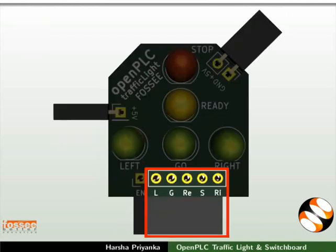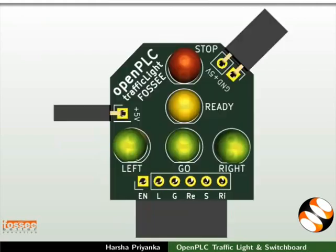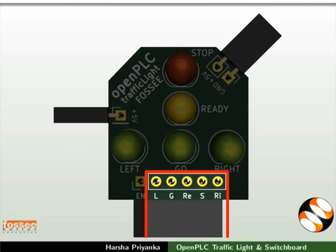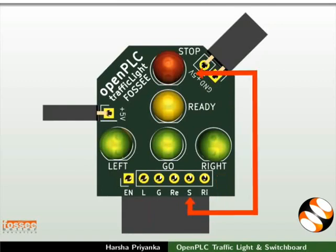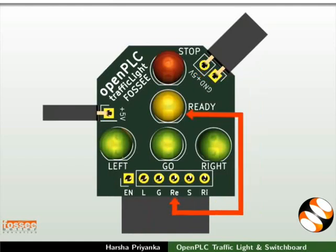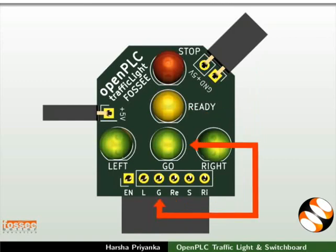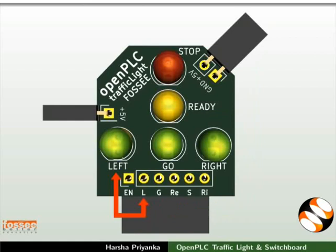We will now see how to use LEDs with the connectors at the bottom of the module. Each LED's cathode is taken out through these connectors. Note that the rightmost pin marked as EN is not an LED connector. Each connector is marked with the first letter of the respective LED name. Starting from the right: RA is for the green LED marked 'right', S is for the red LED marked 'top', RE is for the yellow LED marked 'ready', G is for the green LED marked 'go', and L is for the green LED marked 'left'. EN is an active-low enable pin which enables all the LED pins.